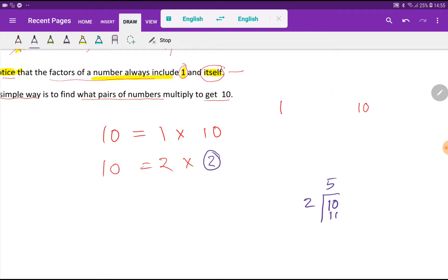If I divide 10 by 2, then I am getting 5 as a quotient without remainder. This indicates that 2 and the quotient, which is 5, are the factors of 10.